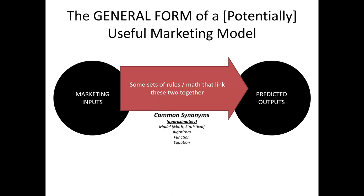Another thing we really have to be aware of as marketing analysts is that we as marketers are a little late to the game of using input-output models, and other scientific and practitioner fields have started to develop their own terminology to describe models. This means that when you are out there in the world looking at so-called models, you have to be aware there's a series of synonyms that effectively mean, in most cases, the same thing. When we're talking about a marketing model, we might use the word model, math, a statistical model, algorithm, function, or equation — the mathematical stuff that connects the input to the output.